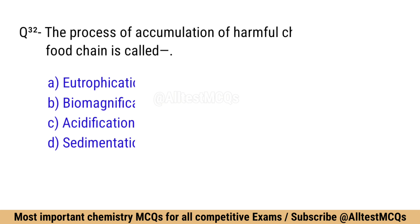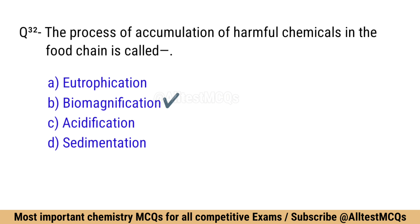Question number 32: The process of accumulation of harmful chemicals in the food chain is called? Correct option is B: Biomagnification.